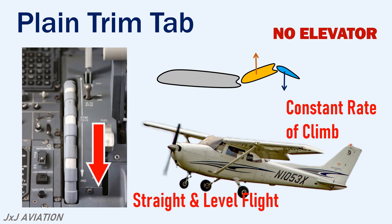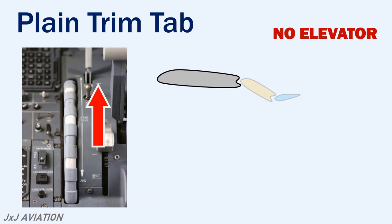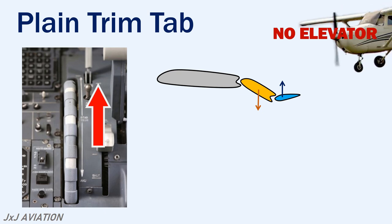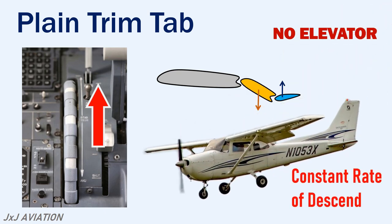If the trim wheel is rolled up, the trim tab is deflected up, which will cause the elevator to be deflected down. Now the aircraft will have a nose down attitude, which could be used to achieve a constant rate of descent.